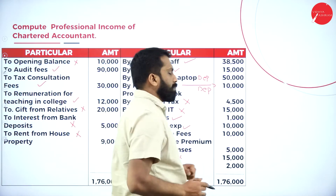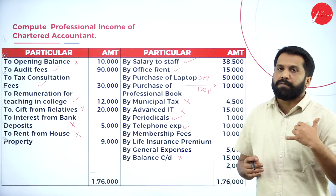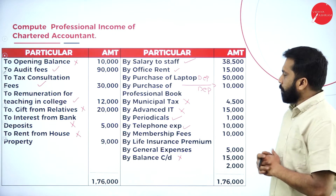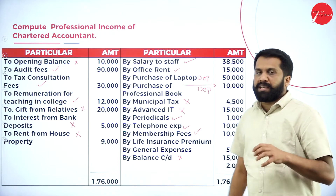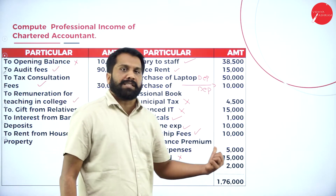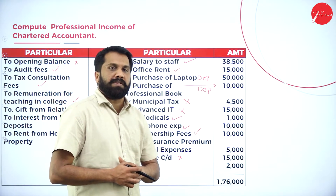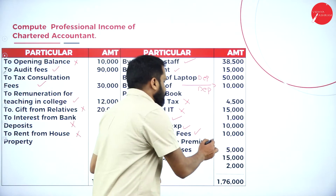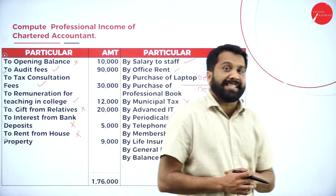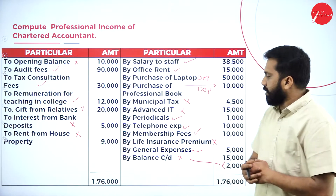Telephone expenses are always part of your profession, because if you have an office you must have a telephone, landline, or mobile so the client can contact you — it comes under professional expenditure. Membership fees are normally part of your profession, unless the adjustment mentions membership for some club or other purpose. Life insurance premium is personal. General expenditure is part of your business, but we will check if there is any adjustment. Balance carried on — we will not consider.